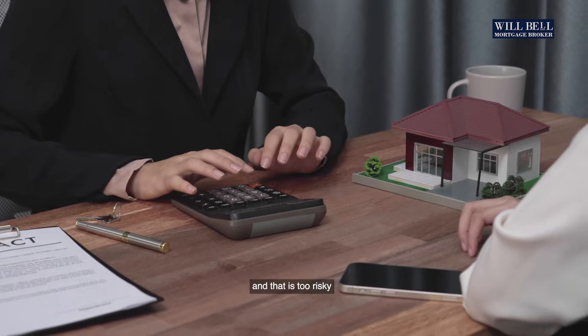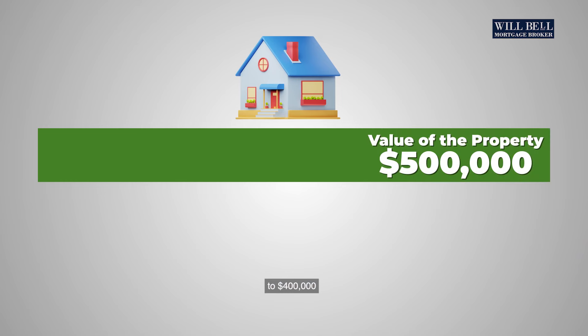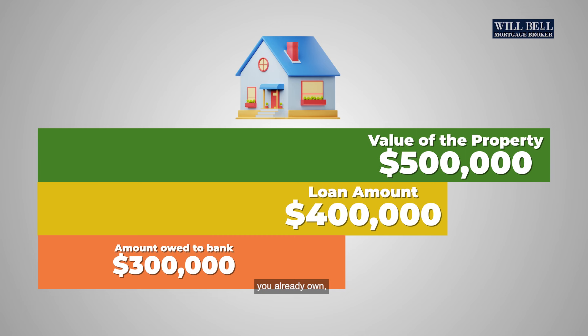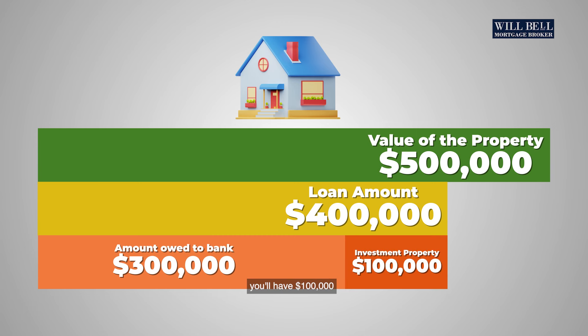An important thing to note is that the bank won't lend all of that equity, otherwise they'd be lending 100% of the value of the property, which is too risky for them. Using a loose rule of thumb, the bank will only lend up to 80% of the value of the property — many lenders will go up to 90%, but we'll keep it simple and use 80%. That means they'll lend up to $400,000 against the property, so after the $300,000 you already owe, you'll have $100,000 of usable equity to buy your investment property.